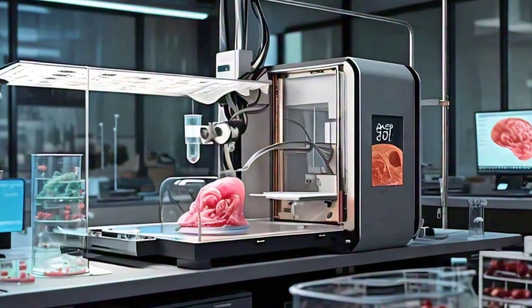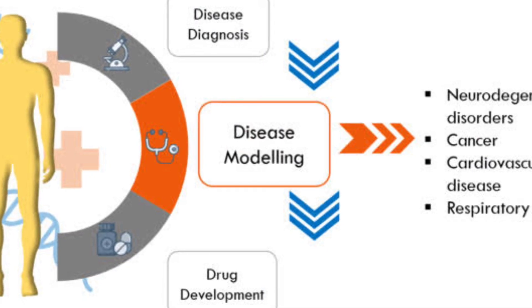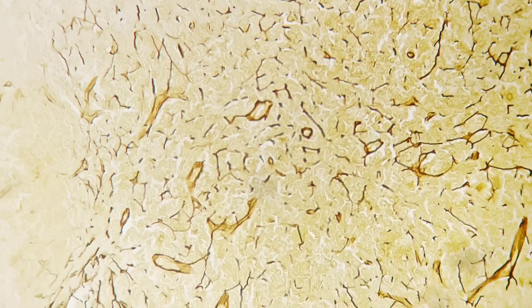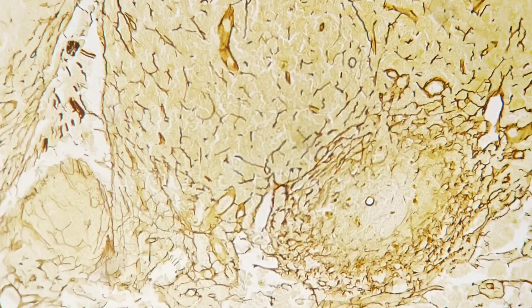So, what does this mean for medicine and research? Well, let's start with disease modeling. By accurately replicating human tissues, scientists can now create disease models that closely mirror how diseases impact specific organs.